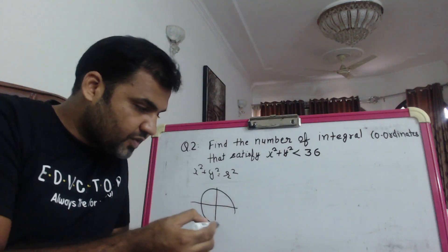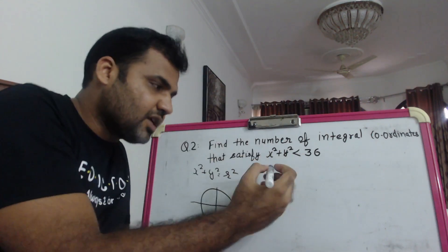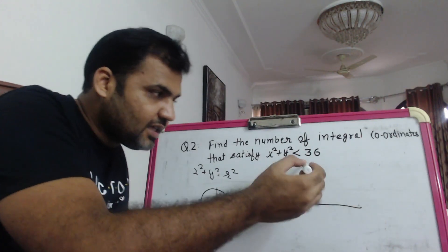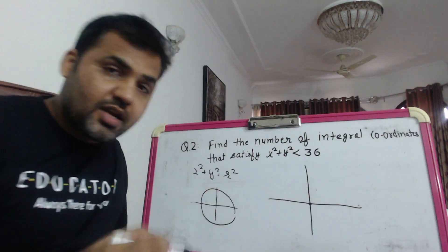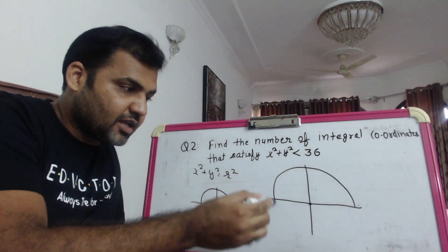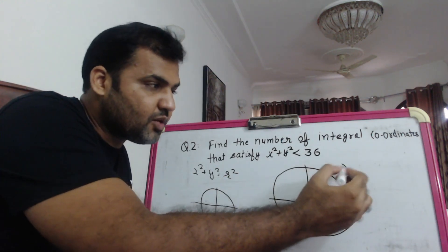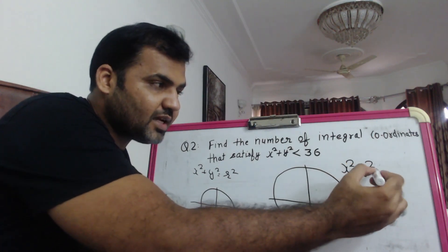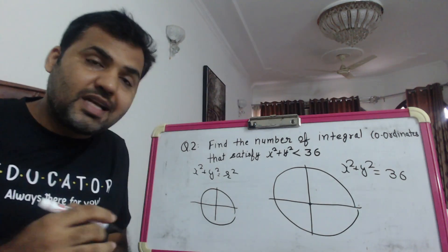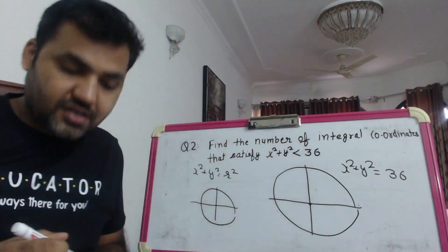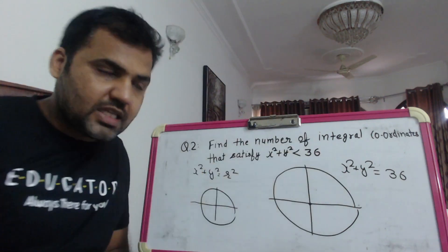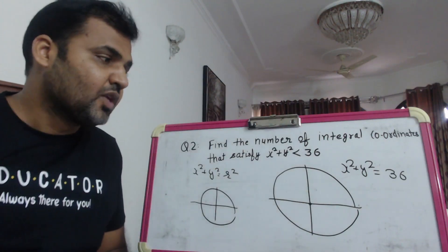For x² + y² = 36, if I draw a circle, you can see it has center (0, 0) and radius 6. This is the equation of the circle x² + y² = 36. Now I want all those coordinates that satisfy x² + y² < 36 - meaning all coordinates that lie inside this circle, because less than 36 means inside the circle.